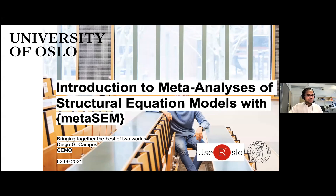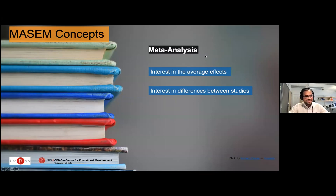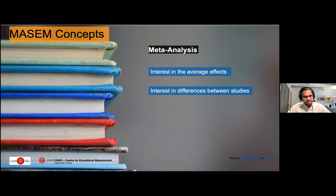I will start first with some background. So what is a MASEM model? A MASEM model is composed of two things — it has the best of two worlds. On one side we have meta-analysis, which is a statistical technique used to combine the results of separate studies with the goal of drawing conclusions based on the combined information. In a meta-analysis we have an interest in the average effect and in the differences between studies.